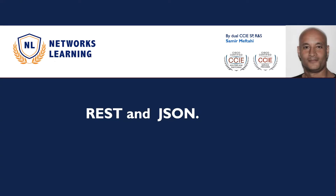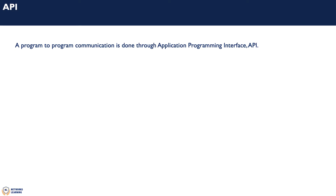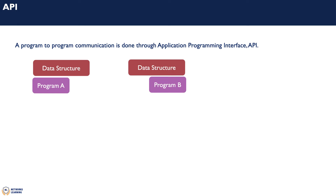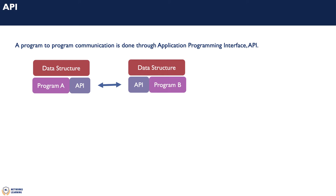Hello and welcome to a new video. Today's session is an introduction to REST APIs and JSON. An application programming interface, or API, is the interface through which programs communicate. If program B wants to learn the data structure of program A, both programs must communicate through their APIs. Several APIs exist; the representational REST API is one of them and the one listed in the CCNA exam blueprints, which we will focus on in this video.